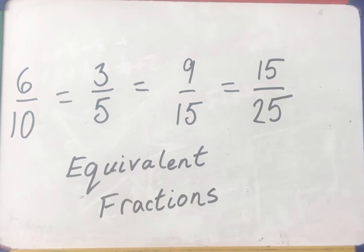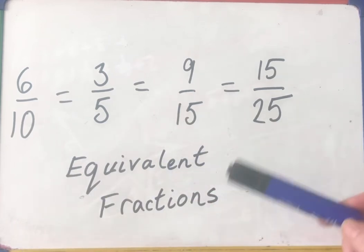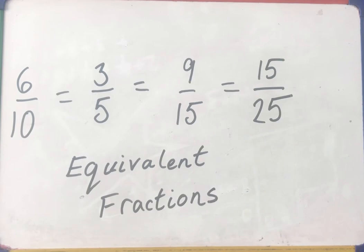Now you can see on here that I've got 6/10 = 3/5 = 9/15 = 15/25. And that's because equivalent means they are the same, they have the same proportion.